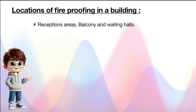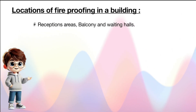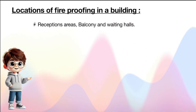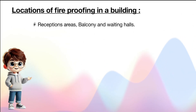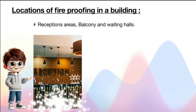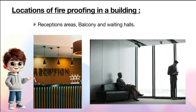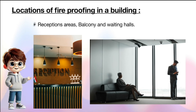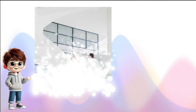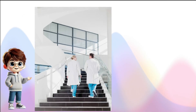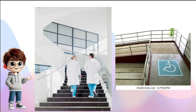Now we will see the usual locations in a building where we need to provide fireproofing. The first locations are reception areas, balconies, and waiting halls, and then stairs and ramps.